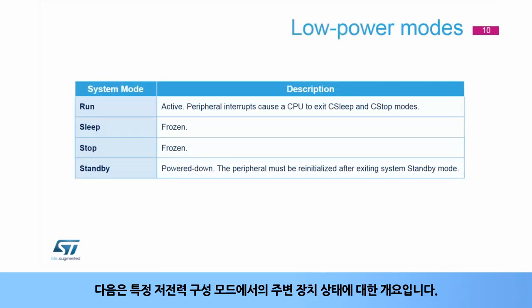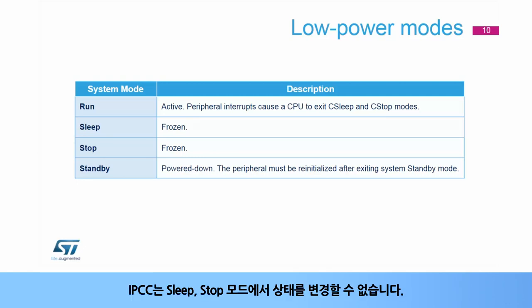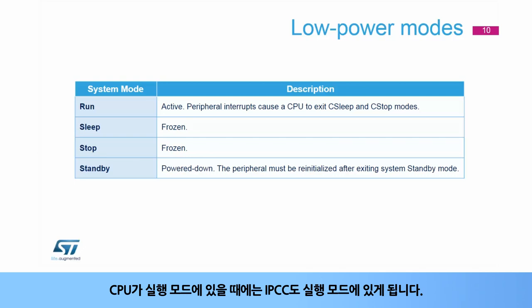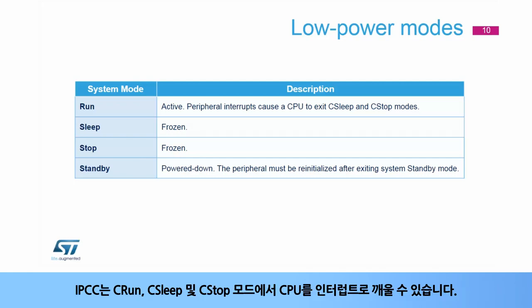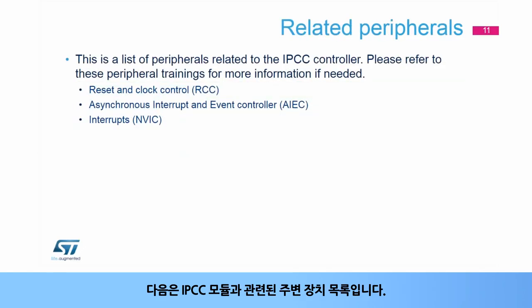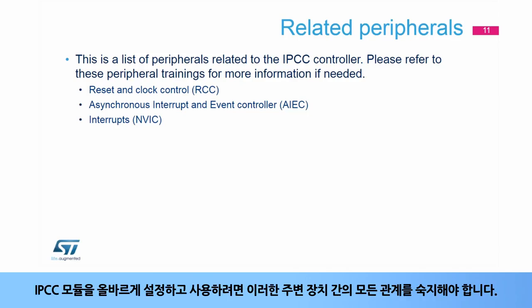Here is an overview of the peripheral status at specific low-power configuration modes. The Interprocessor Communication Controller is not able to change states in sleep and stop modes. In standby mode, the IPCC content is lost. The IPCC will be in run mode whenever a CPU is in run mode, and is able to interrupt and wake up a CPU in C-run, C-sleep, and C-stop modes. Here is a list of peripherals related to the IPCC module. Users should be familiar with all the relationships between these peripherals to correctly configure and use the module.